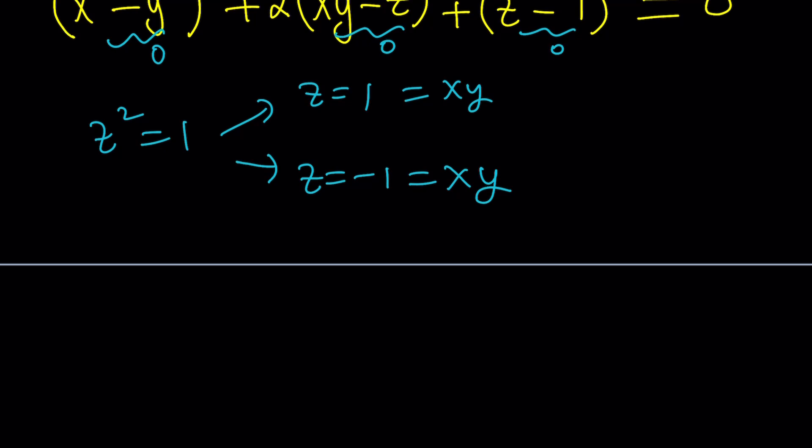So this gives you the following. This is going to be plus minus 1. And x, y, z values are going to look like this. 1, 1, 1. They can be negative 1, 1, negative 1. And 1, negative 1, negative 1. Notice that z is always x times y.